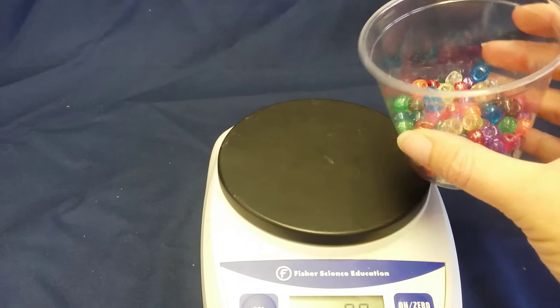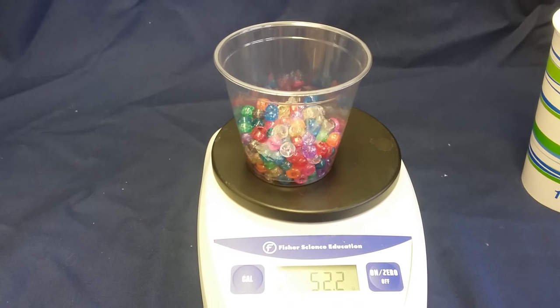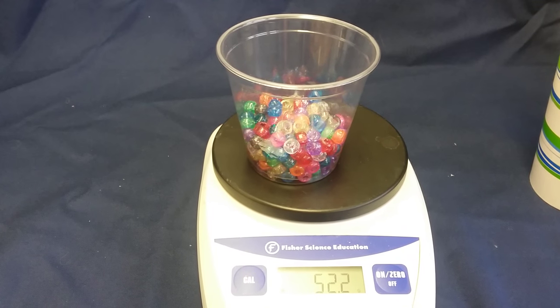Like, maybe these beads. I could put the cup of beads on there. The problem is that the cup has its own weight. So how do I separate the weight of the cup and the beads?